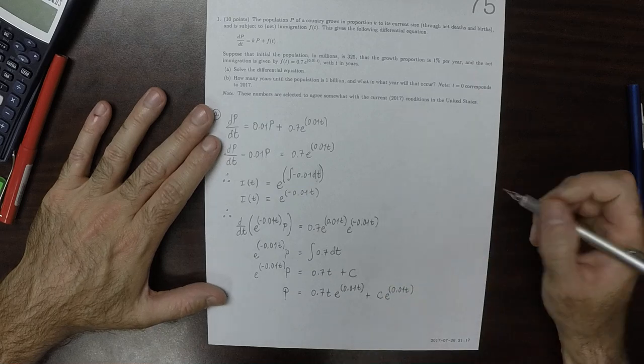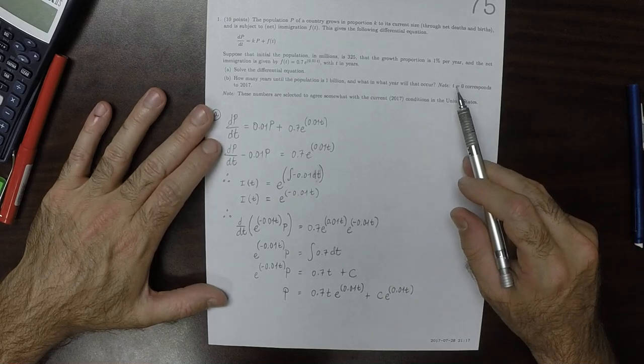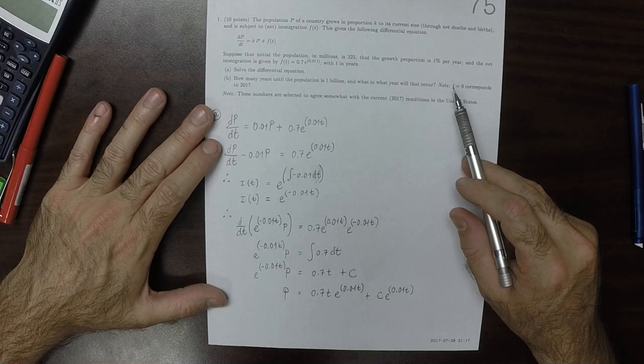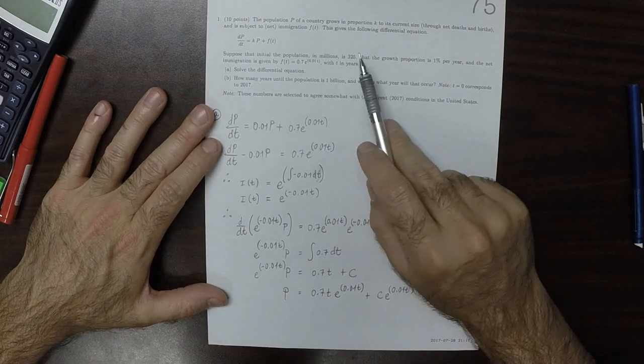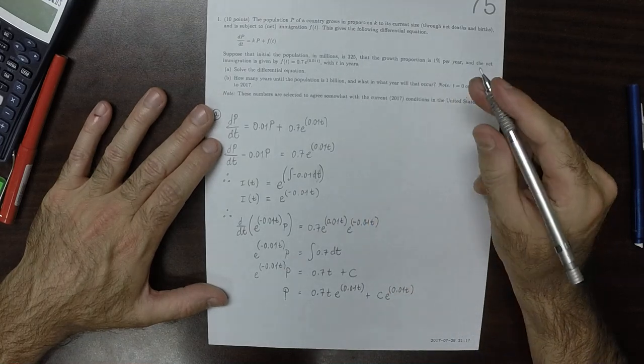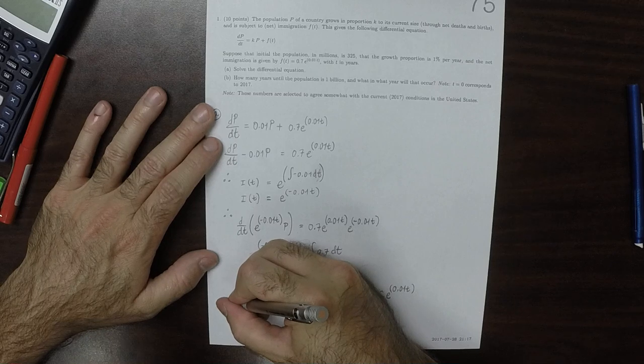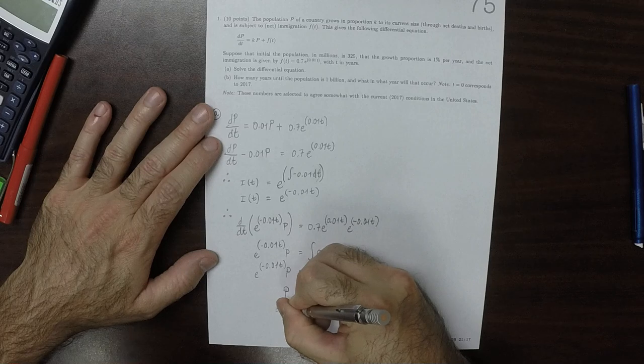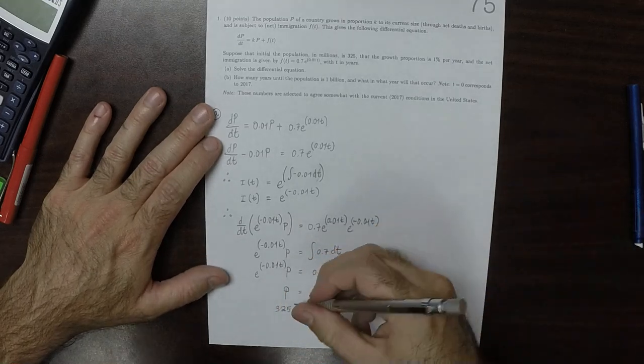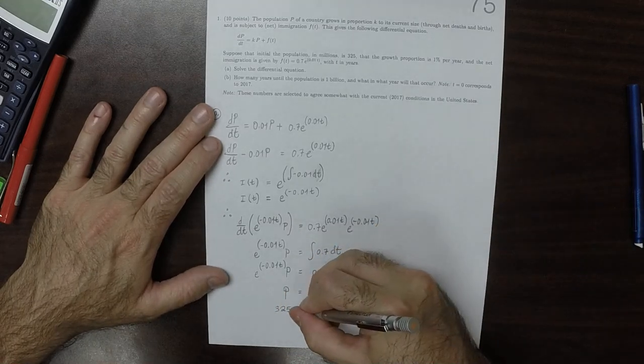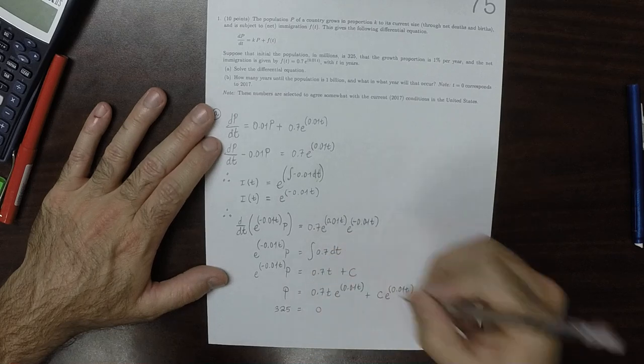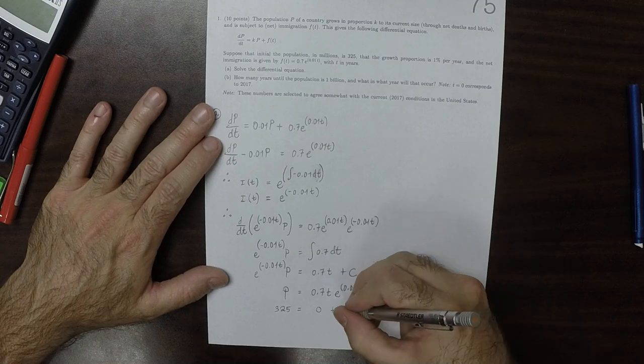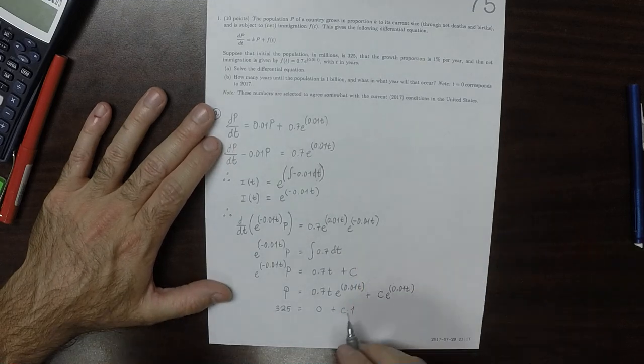So to determine c we can use the initial data. The initial population is 325 million. So 325 million in millions at t = 0. That would be equal to 0 because all that's 0, and then plus c times 1.